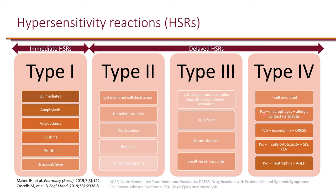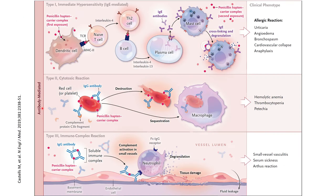Type 4A specifically involves macrophages, and includes things like allergic contact dermatitis. Type 4B involves eosinophils and can cause DRESS — drug reaction with eosinophilia and systemic symptoms. Type 4C is T-cell cytotoxicity, which is extremely severe, including Stevens-Johnson syndrome and toxic epidermal necrolysis. Type 4D involves neutrophils and can cause acute generalized exanthematous pustulosis.